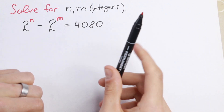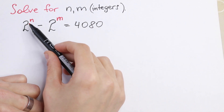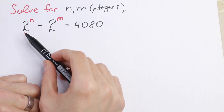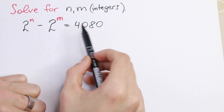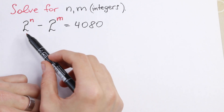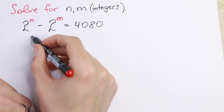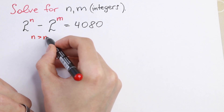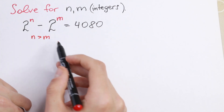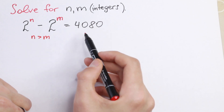I want to show you the best approach to solve this kind of problem. So first of all, we need to note that n is greater than m, because the left side must be greater than the right side. So 2 to the power n is greater than 2 to the power m, because we have a positive answer on the right.